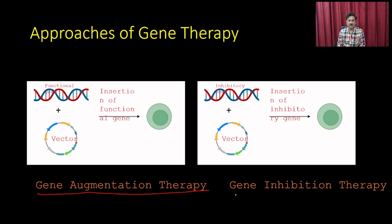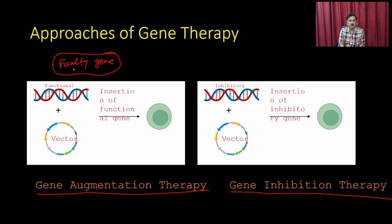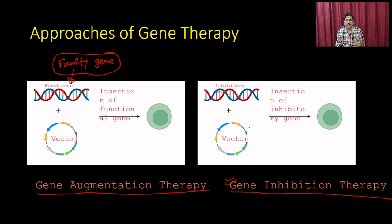In gene augmentation therapy, you have a faulty gene and two options: put in a functional gene from another source via a vector and insert it into the target cell type. The second option is gene inhibition therapy, where the faulty gene is producing undesirable products, so you insert an inhibitory gene to reduce that particular function.